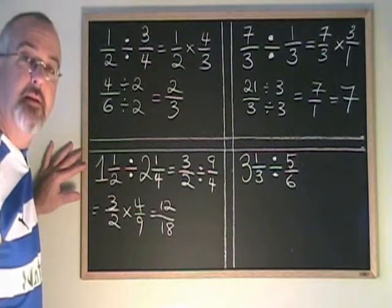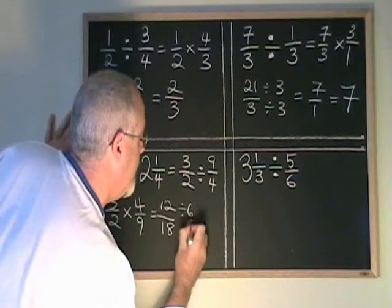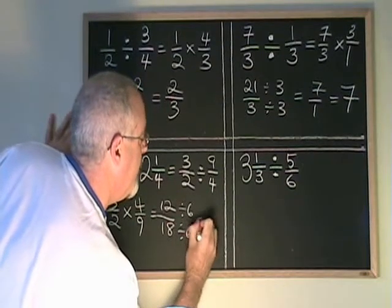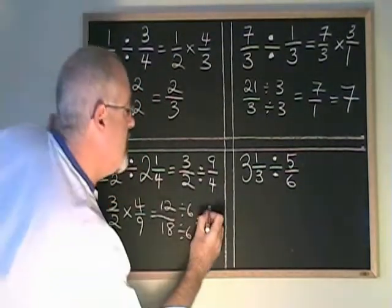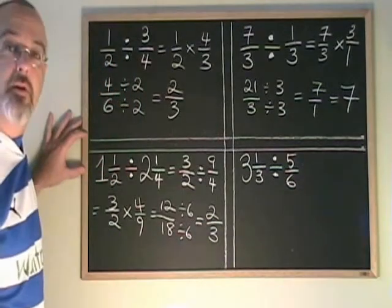I have 12 eighteenths, which can be reduced because 12 and 18 have a common factor of 6. 12 divided by 6 is 2. 18 divided by 6 is 3. I have two-thirds as my final answer.